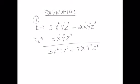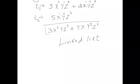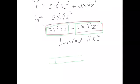You have to use linked lists for this program. Your entire equation will be taken as a linked list, where each term is one node. The node structure for polynomial addition looks like this: coefficient, exponent of x, exponent of y, exponent of z, and a link (or next) pointer. Each node connects to the next with the same structure: coefficient, x, y, z, and link.